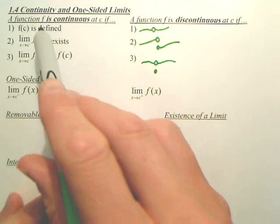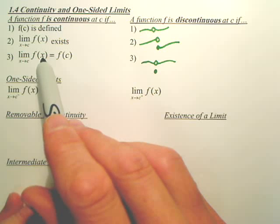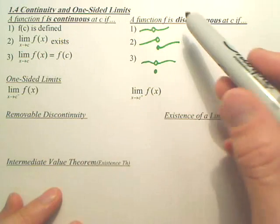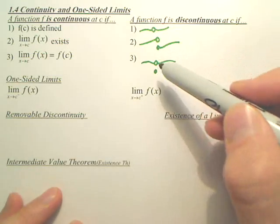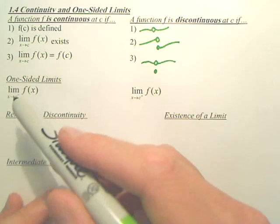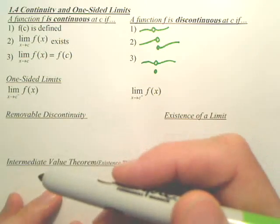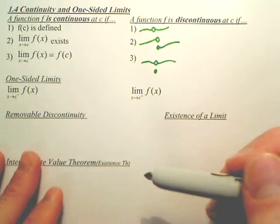So, these three stipulations for something to be continuous must apply. These are examples of non-continuous. There are more examples, but these are examples of the opposites of these.